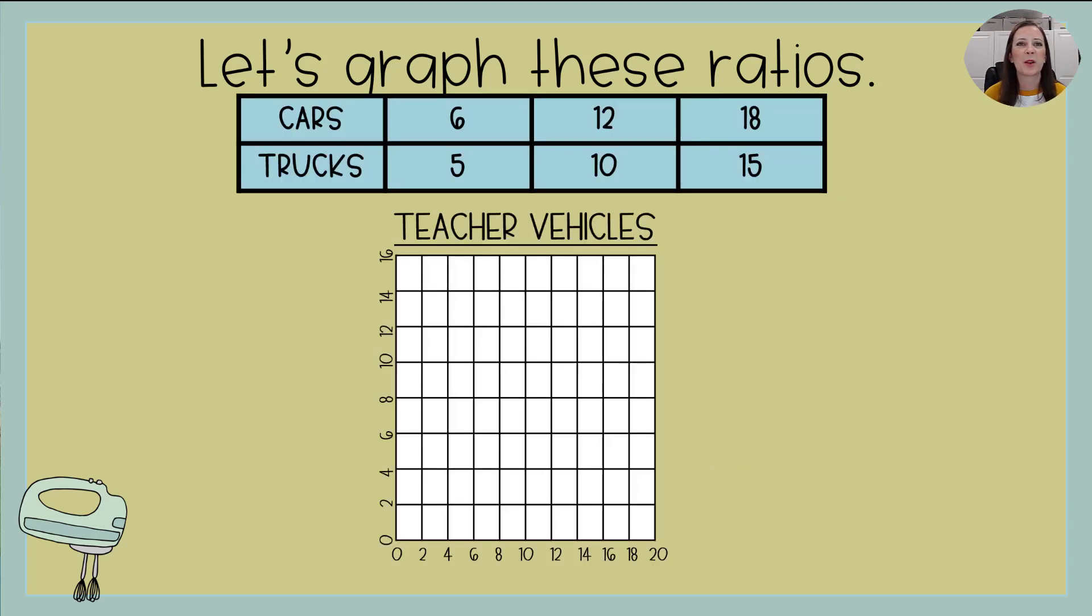All right. Let's try this one. We're going to graph cars and trucks. Again, I've given us a title. These are teacher vehicles. But I need to know which one is the x-axis and which one is the y-axis. What am I putting on that bottom? Yeah, I'm going to put cars on the bottom because the x-axis always comes first. And that means the y-axis is my trucks.